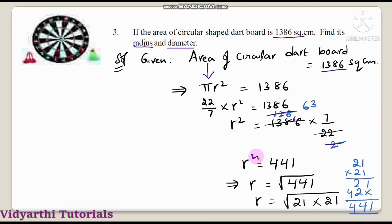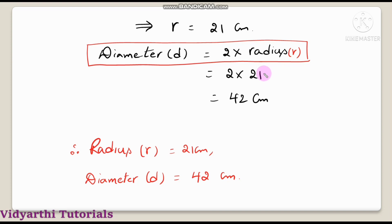r is equal to the square root of 441. Now, 441 is equal to 21 into 21, so the square root of 441 is 21. Therefore r value is equal to 21 centimeters.